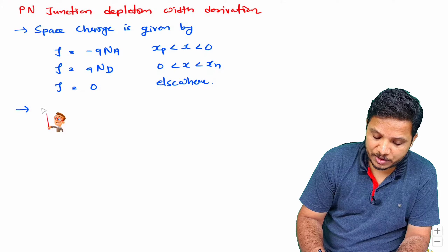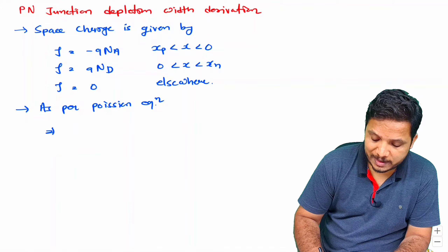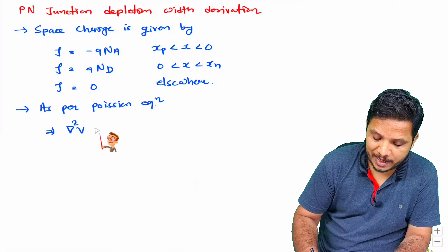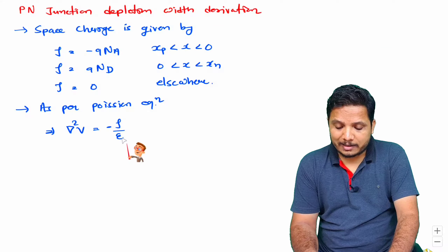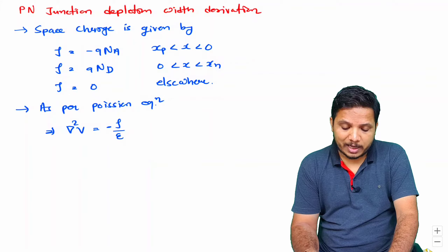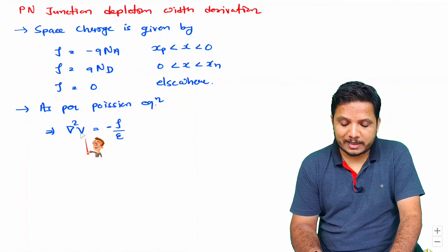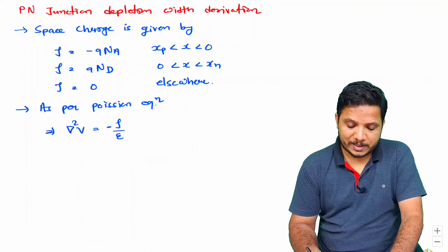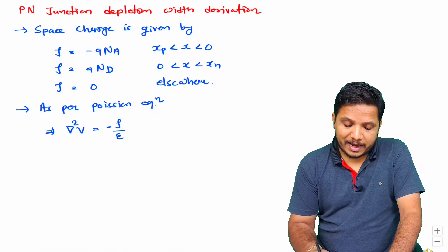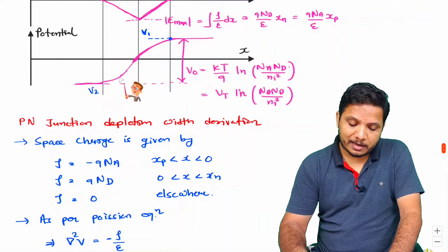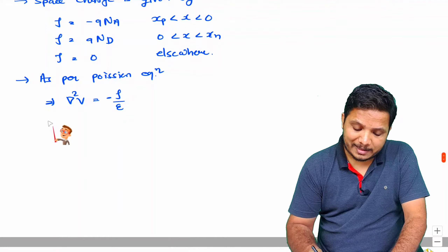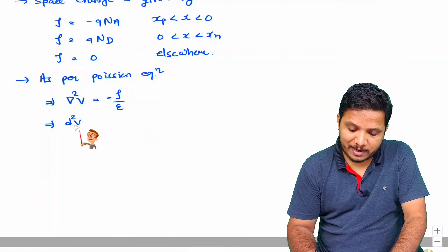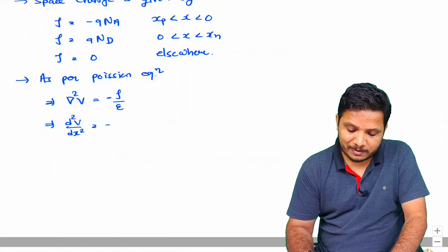To derive the depletion width, I will be using Poisson's equation. Poisson's equation states that ∇²V = −ρ/ε, where ρ is the space charge and ε = ε₀·εᵣ. Since V is changing with respect to X, we can write this as d²V/dx² = −ρ/ε.